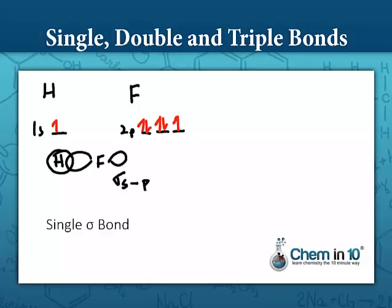So here would be an example of a sigma bond between hydrogen and fluorine in hydrogen fluoride. A sigma overlap of the hydrogen s orbital and the fluorine p orbital.